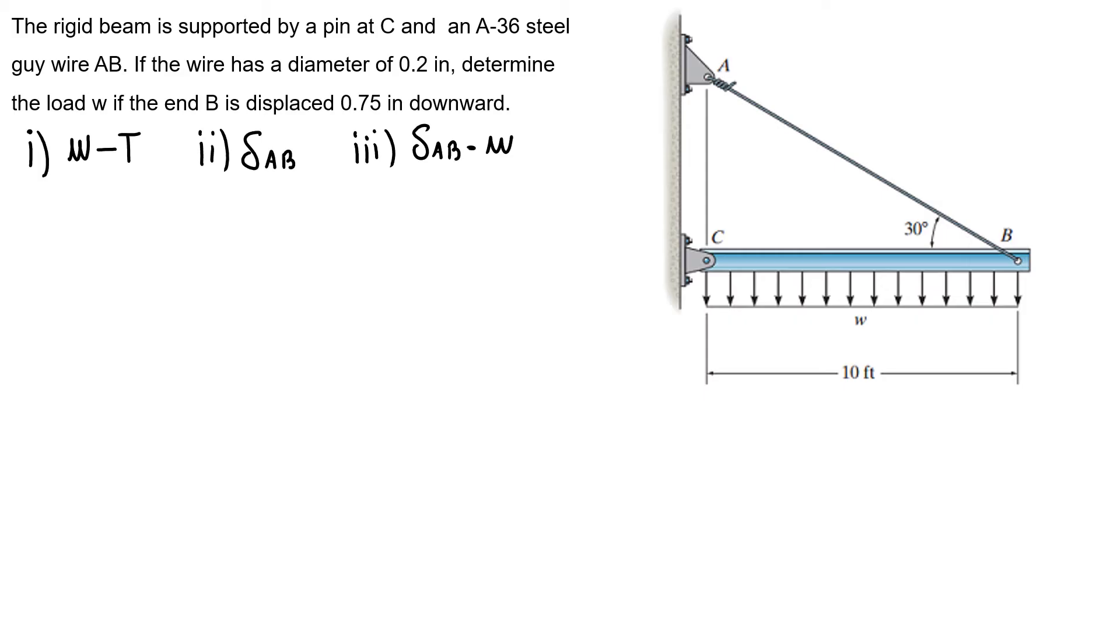Okay, so starting with our free body diagram at my end C. So I have my end B, CB, and then I have my tension with a 30 degree angle. And here I have my load. I know that I'll have like an equivalent load applying at the middle with 10 feet times W. So here I have my equivalent load 10W.